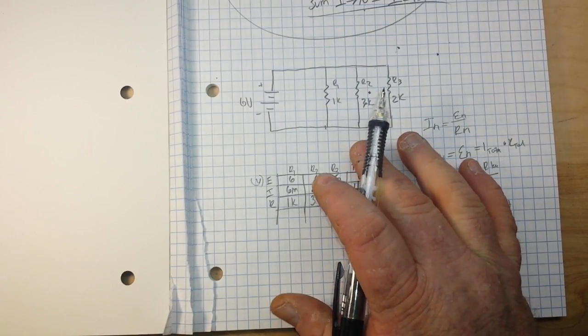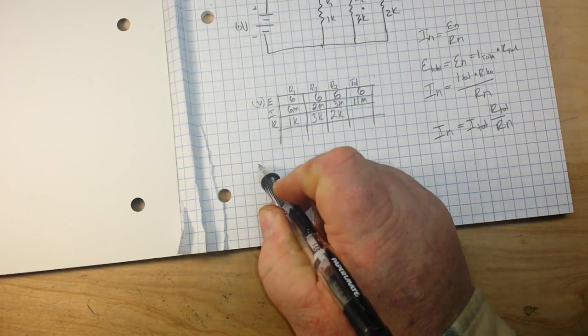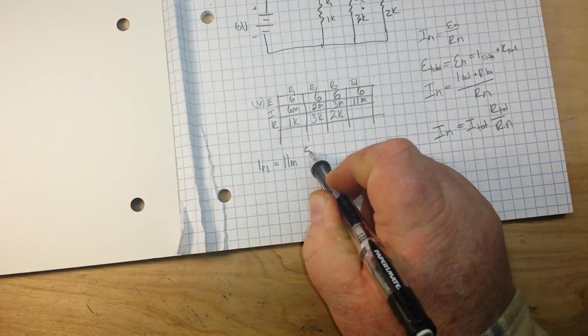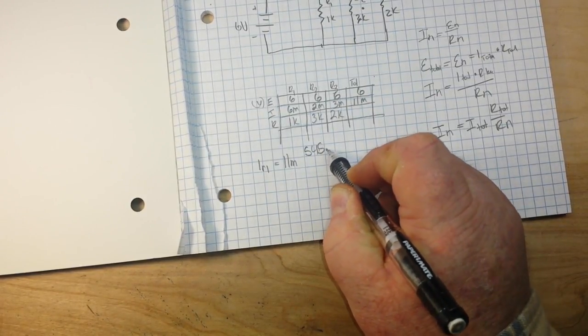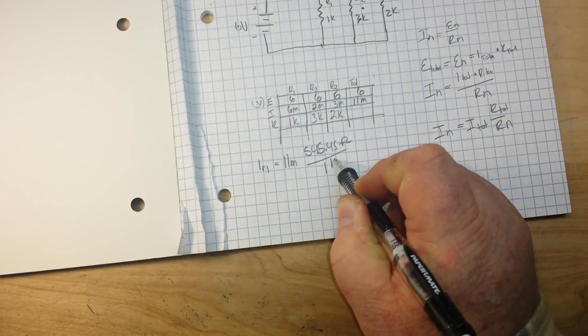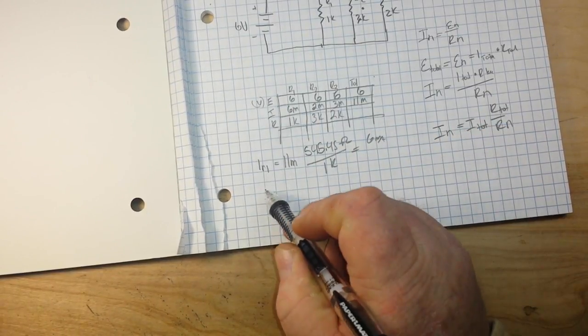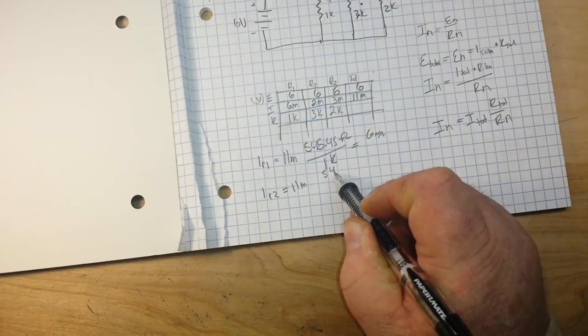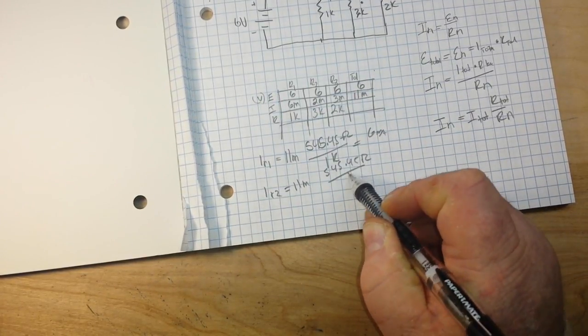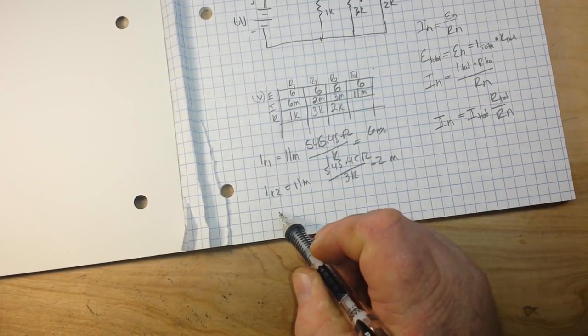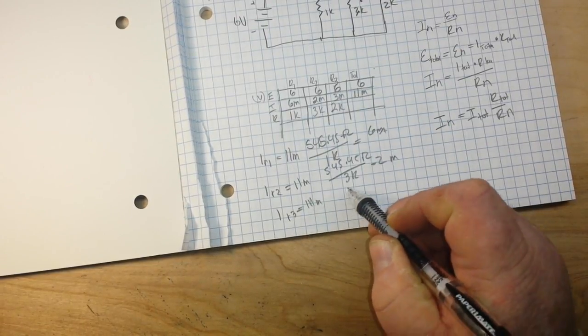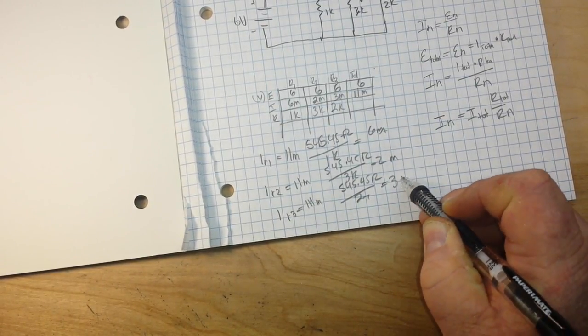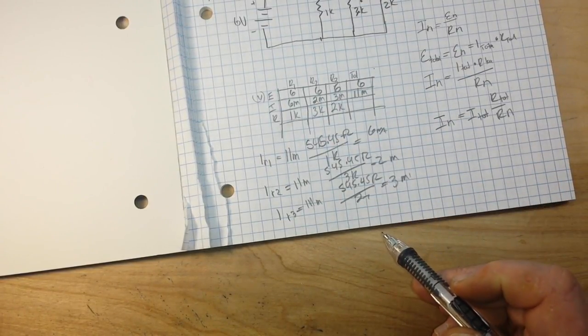So if we use our original circuit to recalculate all of this out, we are going to find out how all the proportions work together. If we say current R1 equals 11 milliamps times 545.45 ohms over 1k ohm, that's 6 milliamps. And the current of resistor 2 is 11 milliamps times 545.45 ohms over 3k equals 2 milliamps. Then the current at R3, also 11 milliamps, is again 545.45 ohms over 2k equals 3 milliamps. See how all the proportions work out exactly the same?